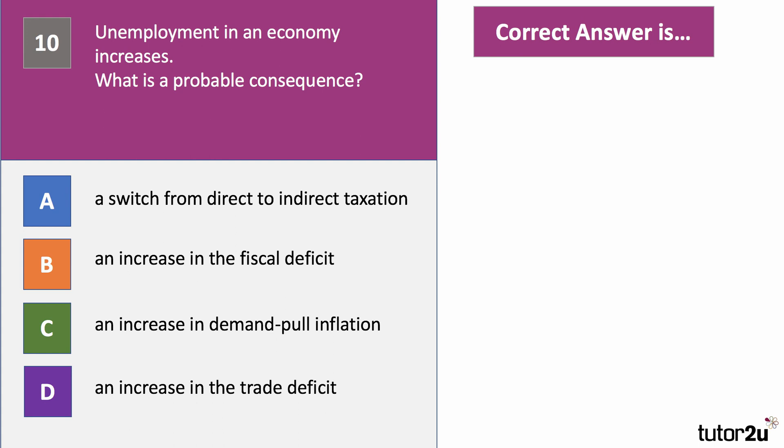Question ten: if unemployment in an economy increases, what is a probable consequence? The answer is B — an increase in the fiscal deficit. When unemployment goes up, the unemployed pay less income tax and VAT, and also receive welfare benefits, creating a double effect: a fall in tax revenue and an increase in government welfare spending, increasing the budget deficit. C is wrong — demand-pull inflation tends to fall when unemployment rises. The trade deficit also tends to decrease when unemployment rises, as fewer people in work means less spending and lower demand for imports. Option A has no relevance to the consequences of rising unemployment.